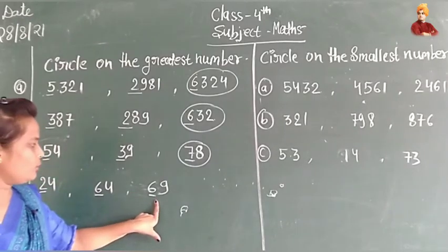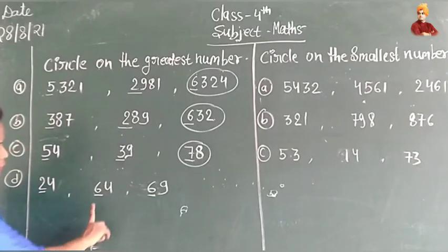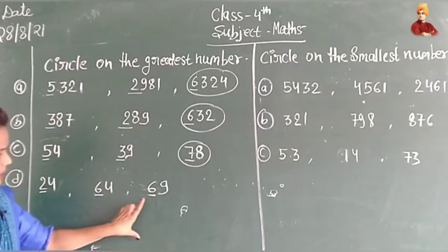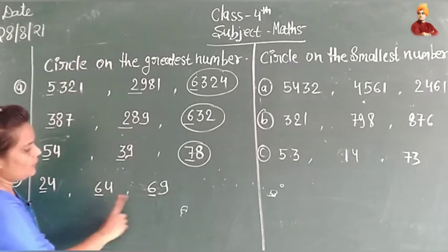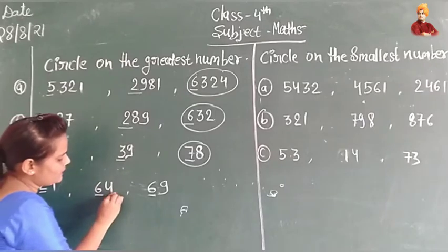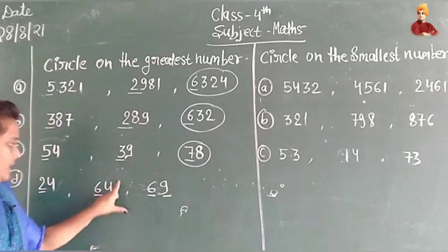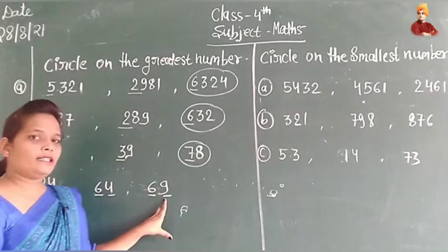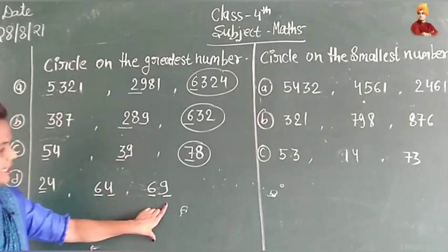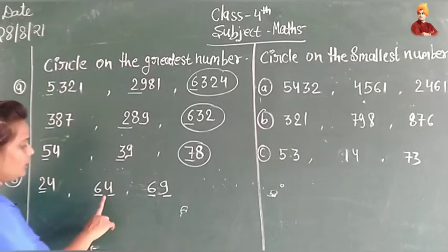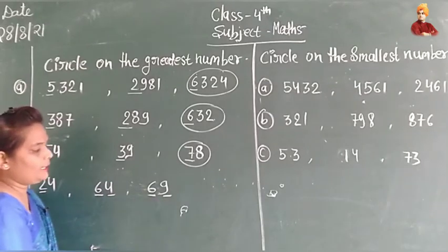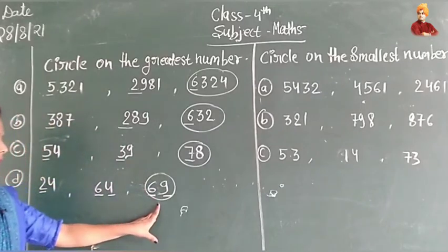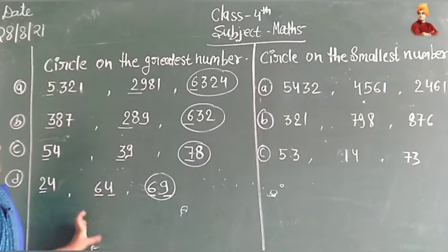We have to compare 64 and 69. In the tens place, both have 6 — the first digits are the same. So we look at the ones place: one has 4 and the other has 9. The greatest number is 9, so 69 is the greatest number. This is how we find the greatest number.